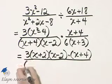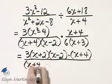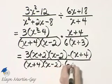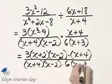And it's denominator times denominator, so x plus 4 times x minus 2 times 6 times x plus 3.